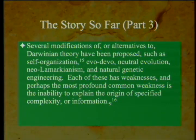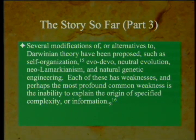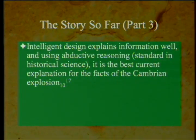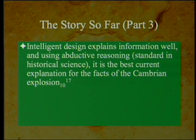Several modifications of or alternatives to Darwinian theory have been proposed, such as self-organization, evo-devo, neutral evolution, neo-Lamarckianism, and natural genetic engineering. Each of these has weaknesses, and perhaps the most profound common weakness is the inability to explain the origin of specified complexity, or information. Intelligent design explains information well, and using abductive reasoning — standard in historical science — it is the best current explanation for the facts of the Cambrian explosion.